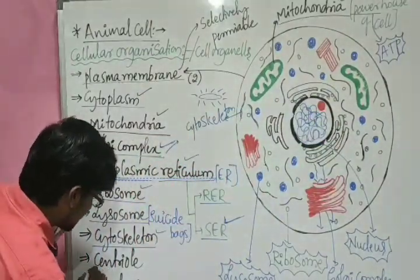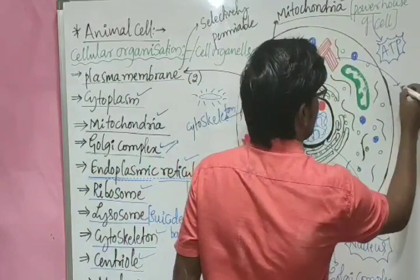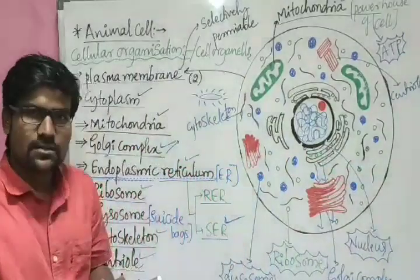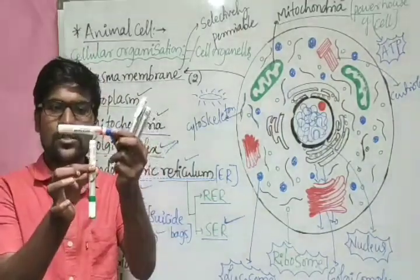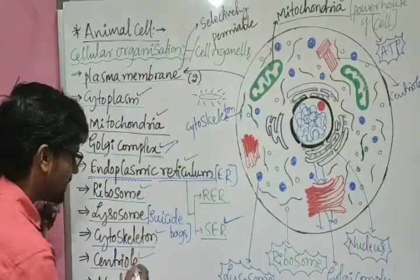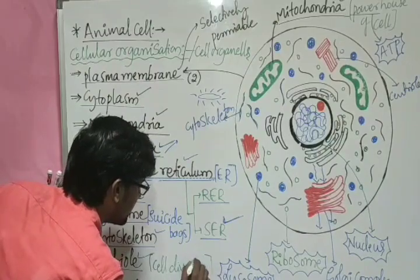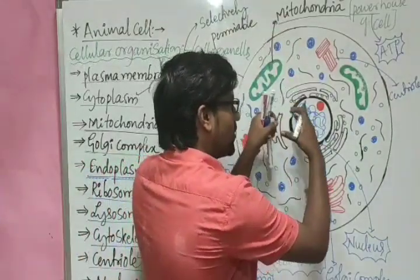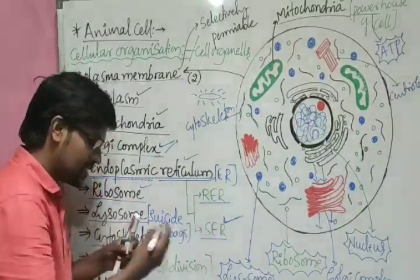Another cell organelle is the centriole — box-like structures. Imagine two matchboxes, one perpendicular to the other — that is the shape of the centriole. The work of the centriole is that it helps in cell division. When one cell divides into two, the centrioles assist in that process.